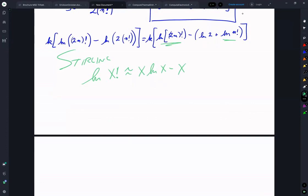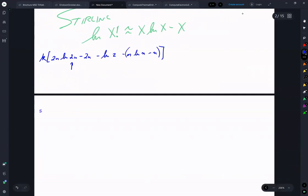So applying the Stirling approximation, we get Boltzmann constant 2N natural log 2N minus 2N minus natural log of 2 from above minus the quantity N natural log of N minus N. And we can take that 2N and expand upon that to get K, 2N natural log 2 minus natural log N minus 2N minus natural log N natural log of N plus N carrying our negative sign across.